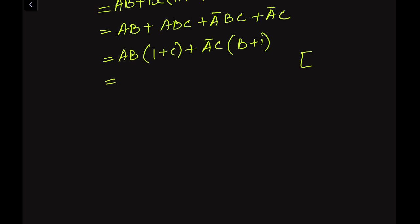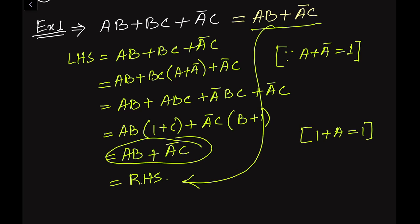Since 1 + C = 1 and B + 1 = 1 in Boolean algebra — because adding 1 to any variable gives 1 — we get AB·1 + ĀC·1, which simplifies to AB + ĀC. This matches the right-hand side of the equation, confirming the result.